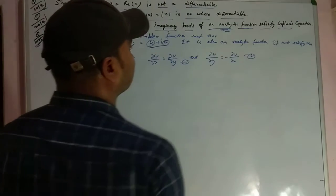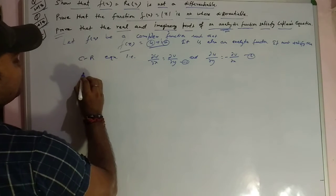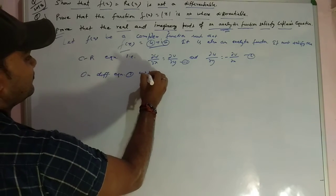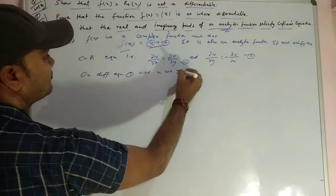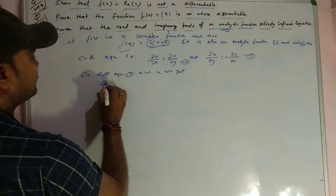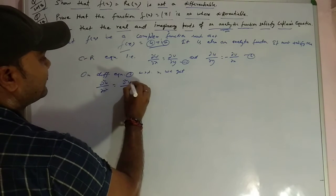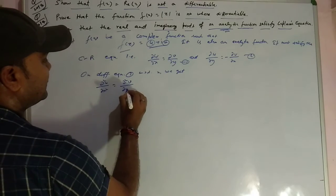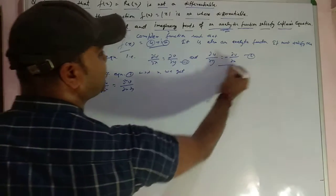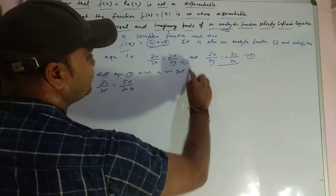इसको हम equation 1 और 2 मान लेते हैं। Laplace के लिए हमें second derivative निकालना होता है। On differentiating equation 1 with respect to x, we get: del²u upon del x² = del²v upon del x del y। और उसी तरीके से, on differentiating equation 2 with respect to y, we get: del²u upon del y² = minus del²v upon del x del y।